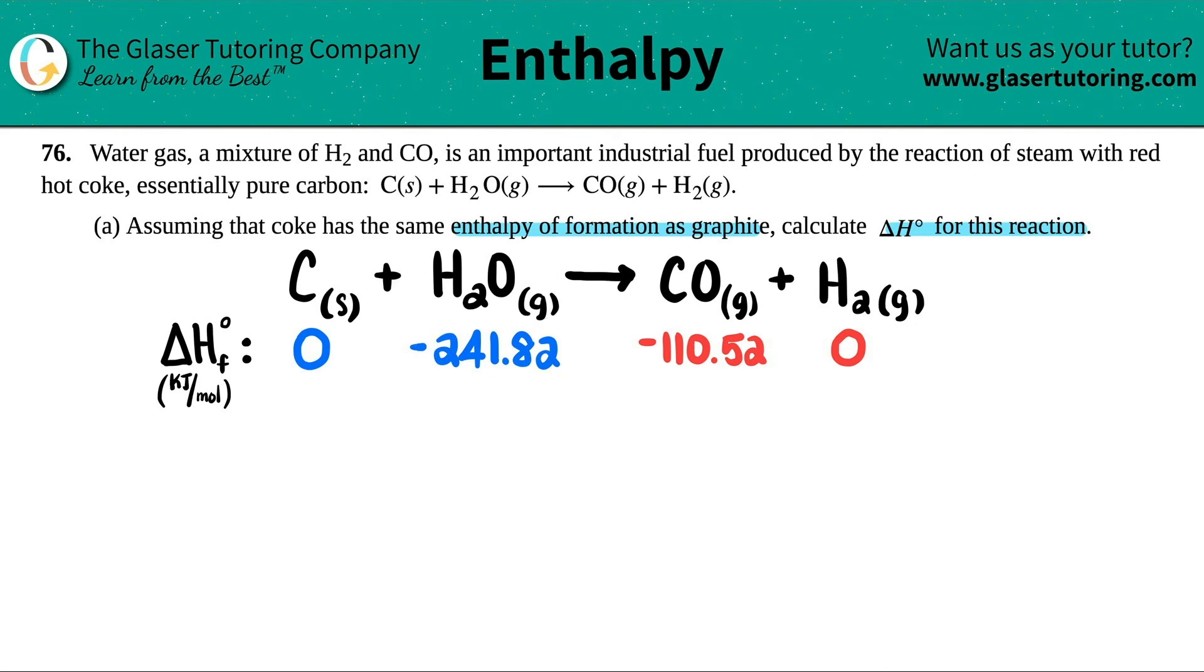Okay, so now how do I find a ΔH for a reaction? You've been doing this, right? It's this formula: products minus reactants. Right, the ΔH for the whole entire reaction is the sum of the products minus the sum of their reactants. We need to get one number for the left and one number for the right-hand side.